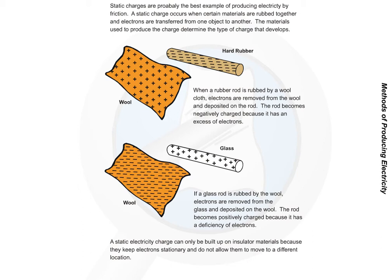If a glass rod is rubbed by the wool, electrons are removed from the glass and deposited on the wool. The rod becomes positively charged because it has a deficiency of electrons. A static electricity charge can only be built up on insulator materials because they keep electrons stationary and do not allow them to move to a different location.